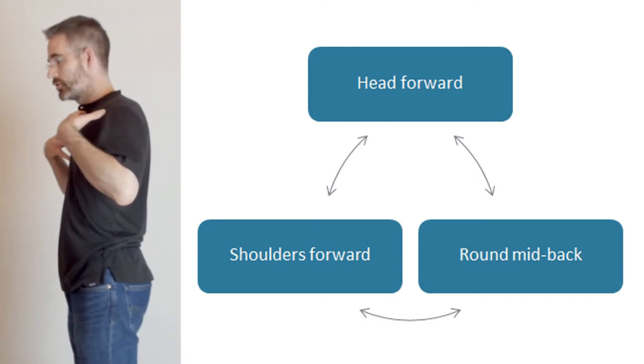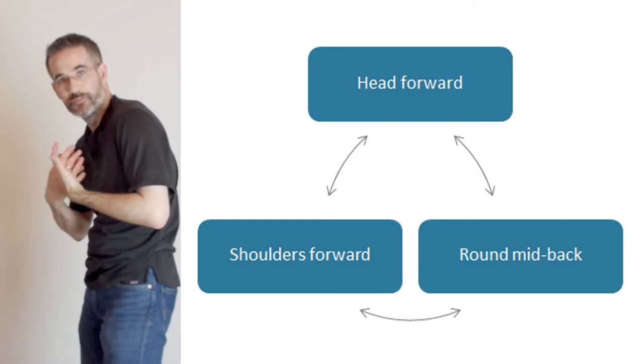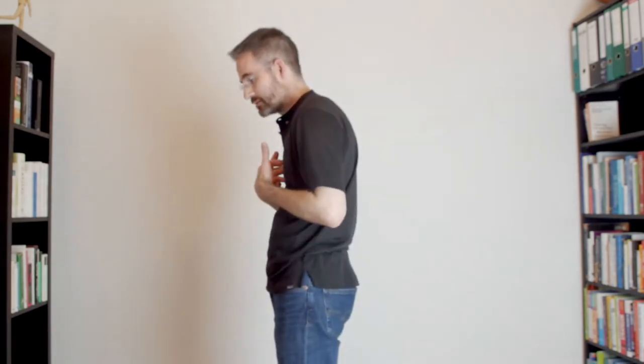But actually, in the upper body, there is a vicious cycle that most people are not aware of. This vicious cycle is that when your head is forward, your shoulders are round and your mid-back is round. Each one of these three is the cause and the consequence of the two others. When your mid-back is round, your shoulders go forward and your head goes forward. When your shoulders go forward, your head goes forward and your mid-back goes round.